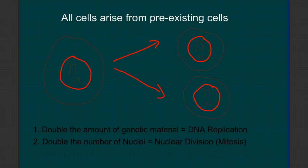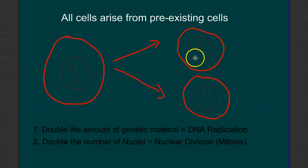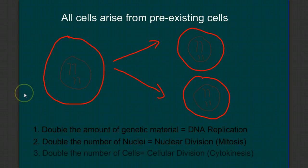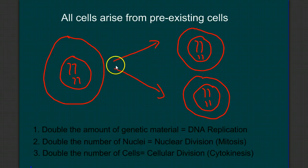And then look at the cell membrane. Over here I have one cell membrane, or one cell, and over here I have two. So we're also going to have to double our number of cells, or have cellular division, or cytokinesis. So we need to think about all three of those steps having to occur to go from one cell to two.